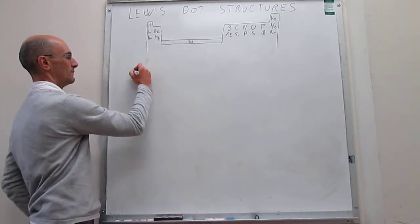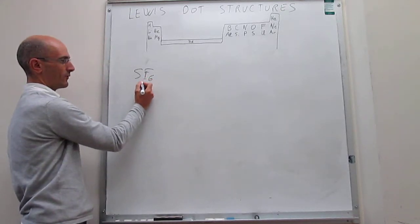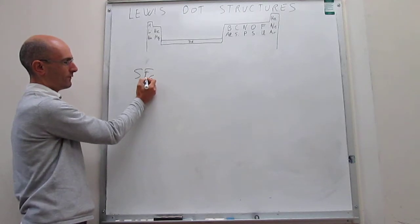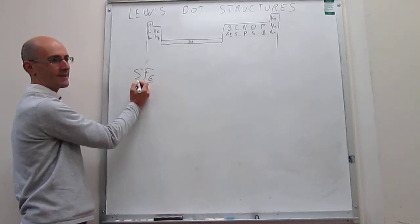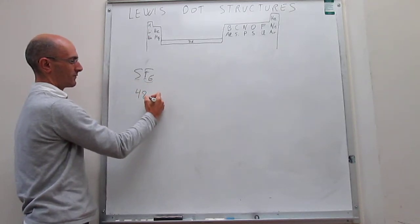Let's actually do the example of sulfur hexafluoride. Let's count electrons. Fluorine has 7 electrons in the valence, so there's a total of 42 from the fluorines, and then sulfur has 6 electrons in the valence, so 42 and 6 is 48 total valence electrons.